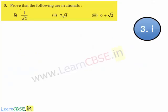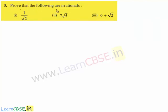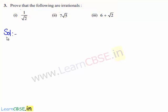Now let us move on to the third question. The question is to prove that the following are irrationals. So now let us move on to the solution. We shall consider the first bit: we need to prove that 1 by root 2 is an irrational.